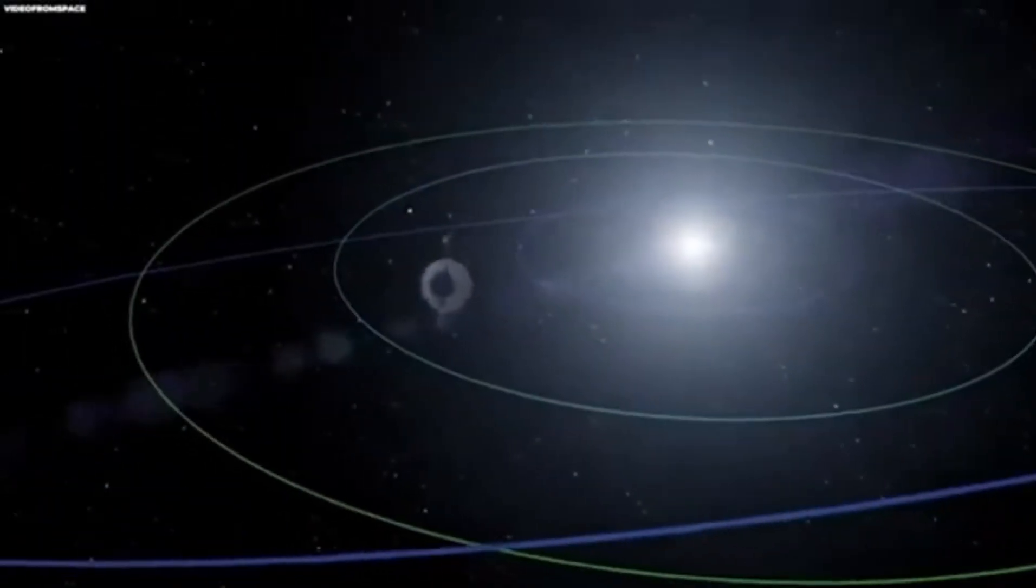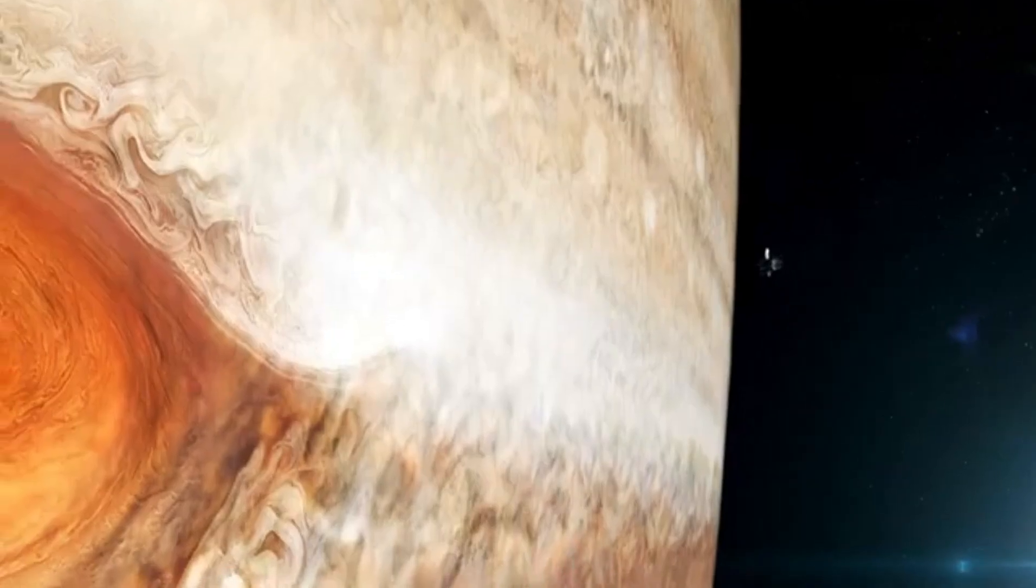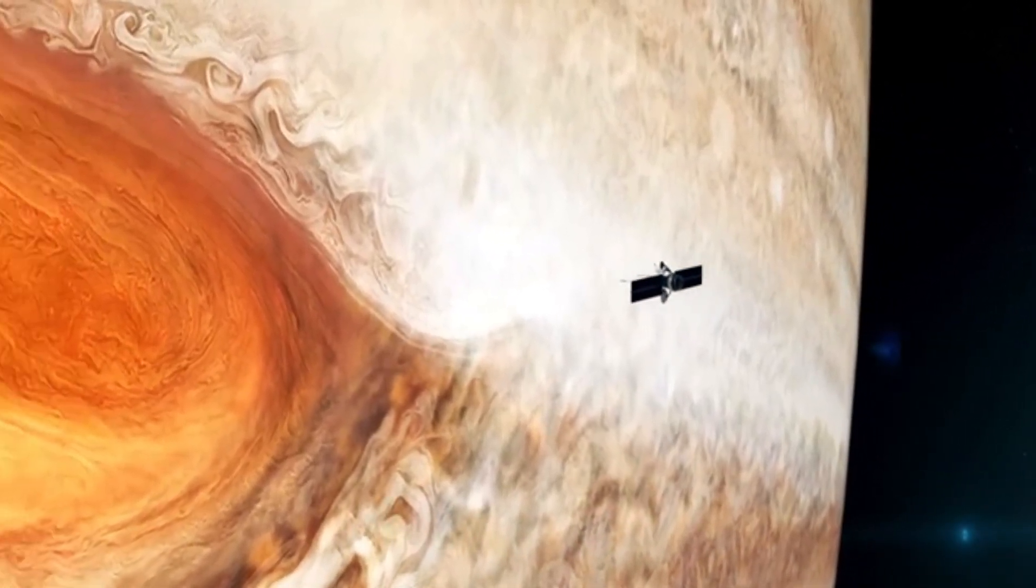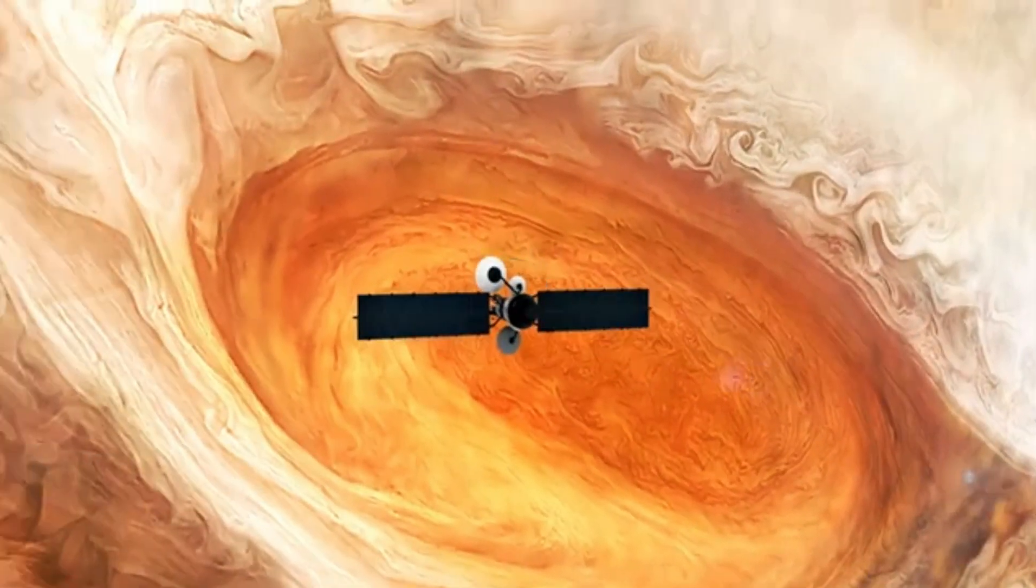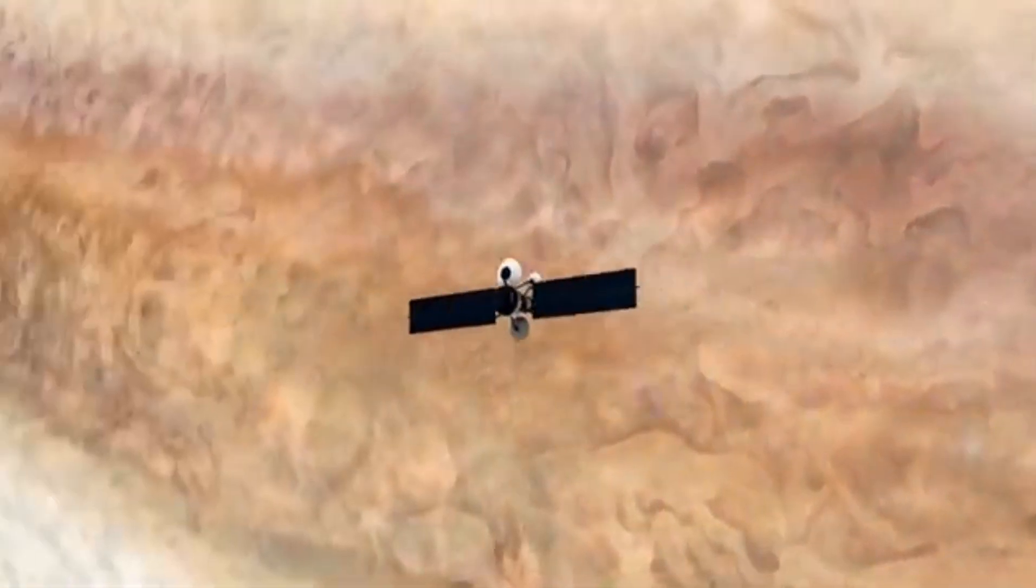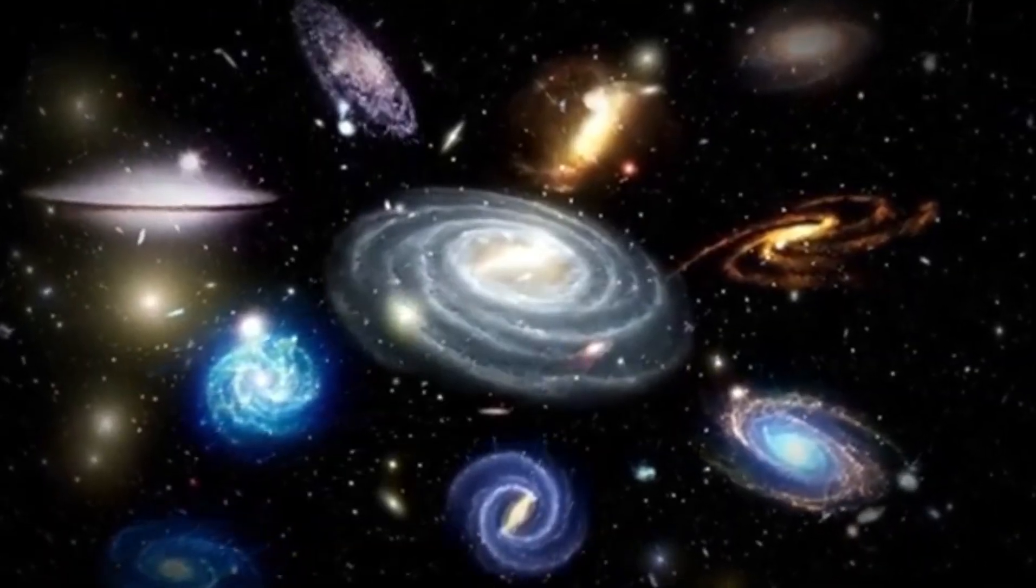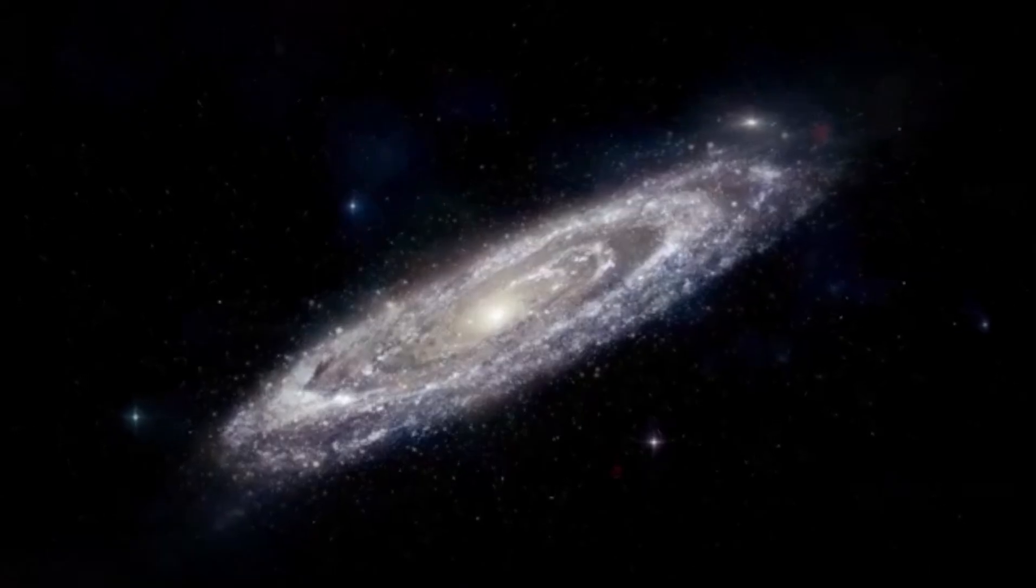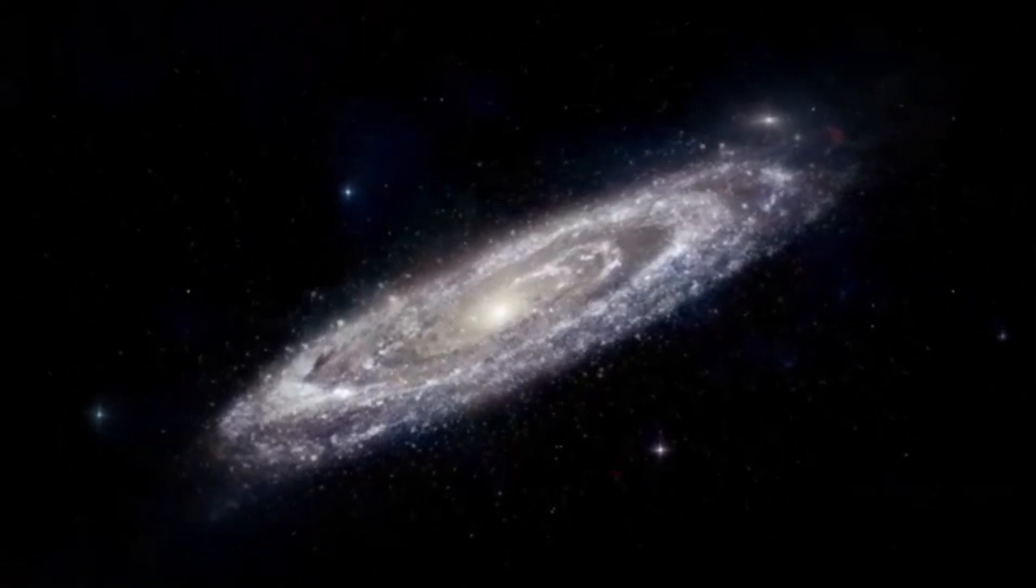Furthermore, the vast distance between Voyager 1 and Earth presents a significant hurdle in maintaining effective communication. As the spacecraft ventured into interstellar space, the strength of the signal it sends back to Earth weakened considerably. Currently, it takes over 21 hours for signals to travel from Voyager 1 to our planet.